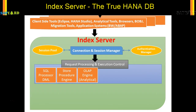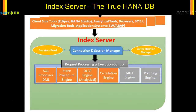Then we have the OLAP engine — the analytical processing engine — where all analysis and reporting are handled. Then we have the calculation engine, which handles complex logic on the calculation views we create. We also have the MDX engine and planning engine. As ABAP developers we may not need them much, since MDX is the multi-dimension engine for BW-related requests, and the planning engine is for BW planning.